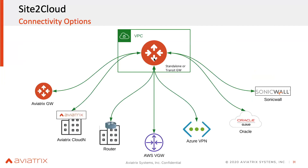Many options are available. This is our Aviatrix gateway — it could be a standalone gateway or it could be a transit. You can connect to the transit gateway, and once connected, you can reach any destination you want. And if you are providing a SaaS-based service to your clients, your objective may be to just bring them into an isolated VPC — that is also possible.